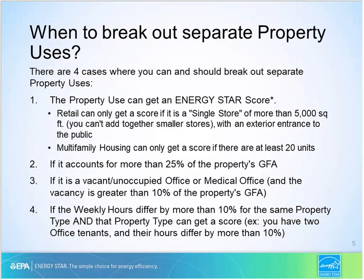There are certain cases where you might want to break out property uses. While EPA does recommend breaking out as few property uses as possible, if a property use meets any of four criteria, you should break it out as its own separate space. For example, if you have an office with a retail store greater than 5,000 square feet on its ground floor, you must break it out because a retail store larger than 5,000 square feet is eligible for an Energy Star score of its own. Additionally, if more than 10% of your office gross floor area is vacant, you are required to break out that vacant space.